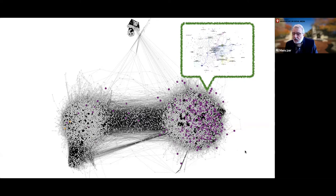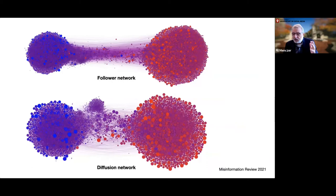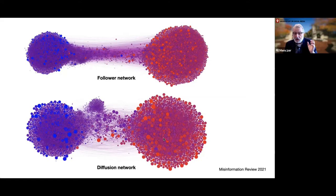This is one way echo chambers make us vulnerable, and although that was a few years ago, it's no different today. Looking at more recent Twitter data — the follower network at the top and the diffusion retweet network at the bottom — we still see this highly segregated and polarized echo chamber structure. The size of the nodes represents the fraction of links shared that go to low credibility sources, and most of the largest nodes are on one side or the other.